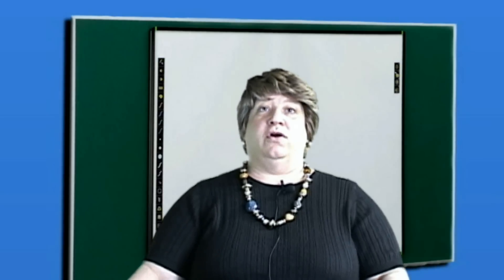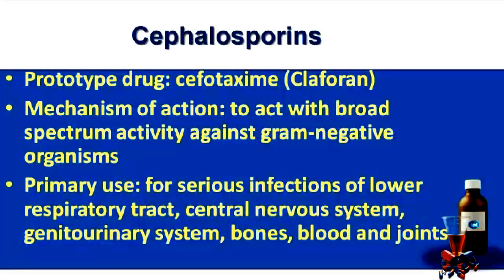With the cephalosporins, our prototype drug is cefotaxime, which is also known as Claforan. It works due to its broad-spectrum activity against gram-negative organisms, and it's indicated for serious infections of the lower respiratory tract, the central nervous system, genitourinary systems, and also infections of bone, blood, and also joints.